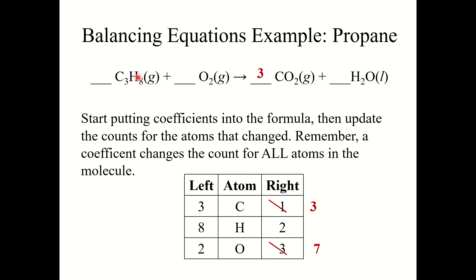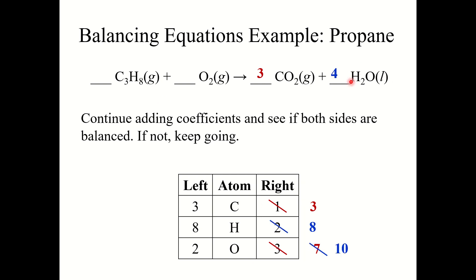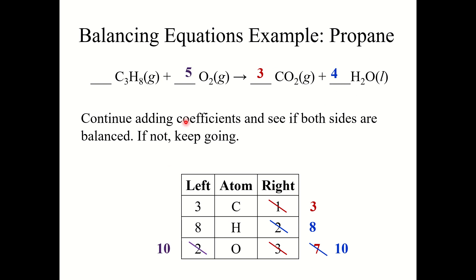I've got 8 hydrogen atoms on the left, only 2 on the right. So I place a 4 in front of H2O, giving me 8 hydrogen atoms on the right — carbon and hydrogen are both balanced. Because of this change, I now have a total of 10 oxygen atoms on the right: 6 from CO2 and 4 from water. So the final step is to go back to the left side: I put a coefficient of 5 in front of O2, giving me 10 oxygen atoms. Final count: 3 carbons on both sides, 8 hydrogens on both sides, and 10 oxygens on both sides. This is a balanced equation.